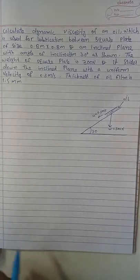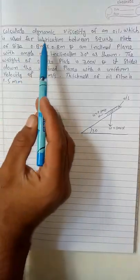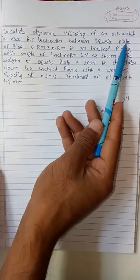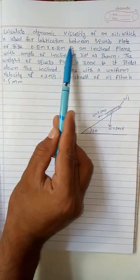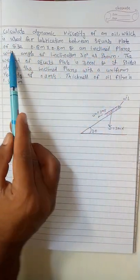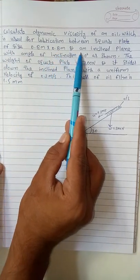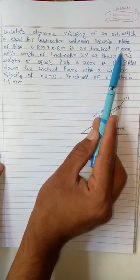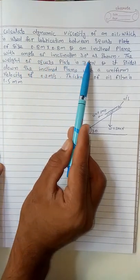Hello friends, let me solve a second example. This is to calculate the dynamic viscosity of an oil which is used for lubrication between a square pallet of size 0.8 by 0.8 meters and an inclined plane with an angle of inclination 30 degrees.